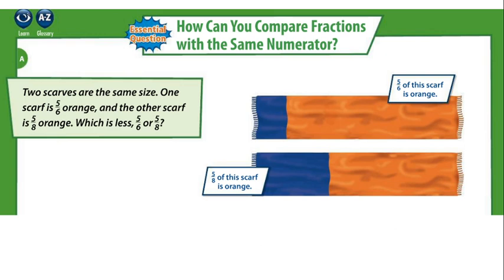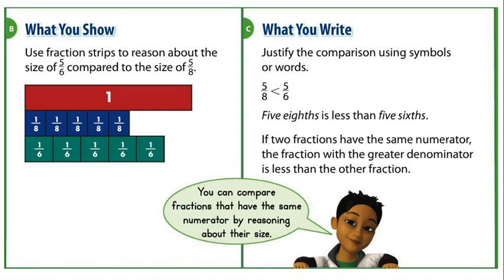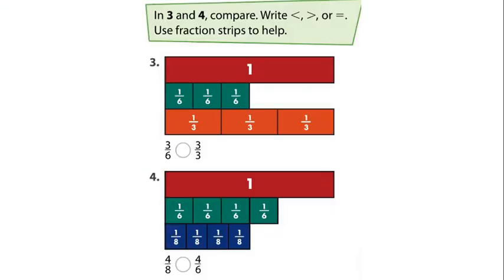As a rule, the fraction with the smaller denominator is the greater fraction, as long as both fractions have the same numerator. In this case, 5 over 6 is greater than 5 over 8 because it has the smaller denominator. So 5 over 8 is less than 5 over 6. Now open page 693.